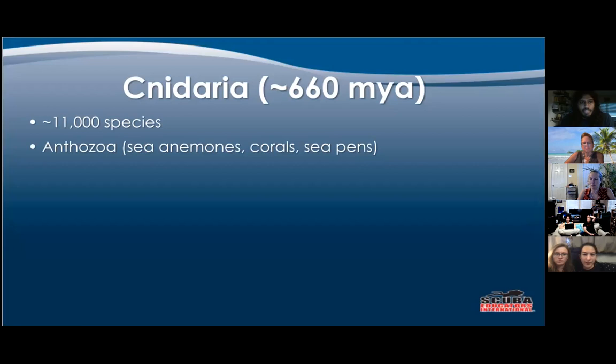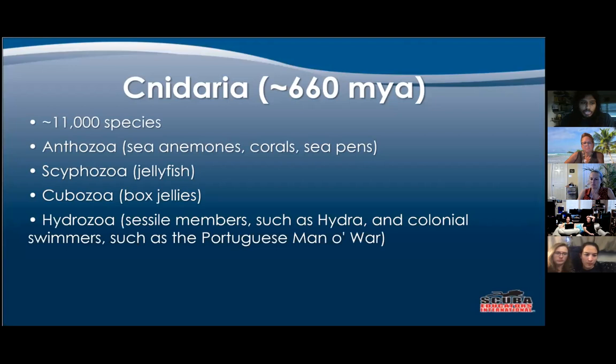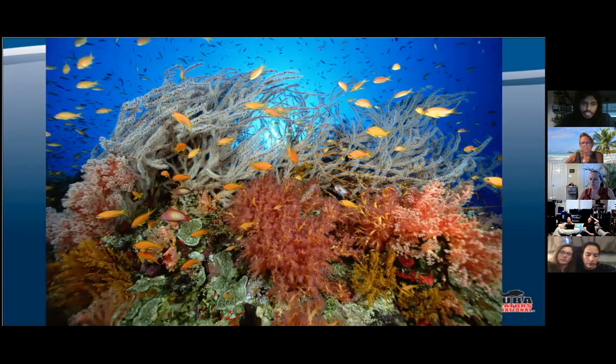In Cnidaria you have Anthozoa, which are your sea anemones, corals, and sea pens; Scyphozoa, which are your jellyfish; Cubozoa, which are box jellies; and Hydrozoa, which are colonial members such as hydras or Portuguese man-o'-wars. They can be found at great depths and polar regions, and some like the hydras are even found in fresh water. Their distinguishing feature is cnidocytes — specialized cells used for capturing prey, like harpoons. Here you can see some beautiful coral, which are hugely important for ecosystems and hold the highest biodiversity.